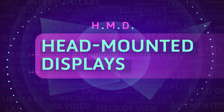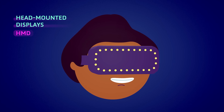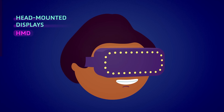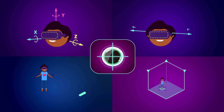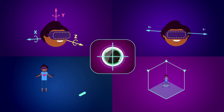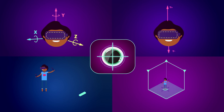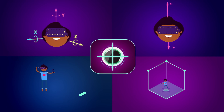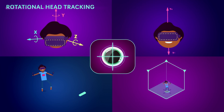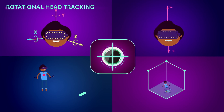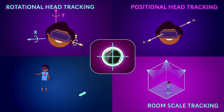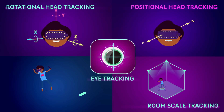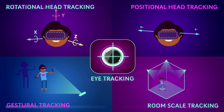HMD, head mounted displays are your portal into these new realities. There are different types of tracking techniques that can be combined to map your physical movements in digital space: rotational head tracking, positional head tracking, room scale tracking, eye tracking, and gestural tracking.